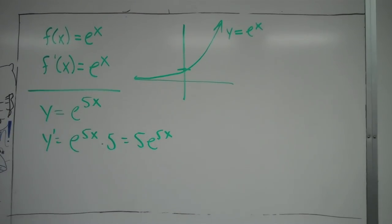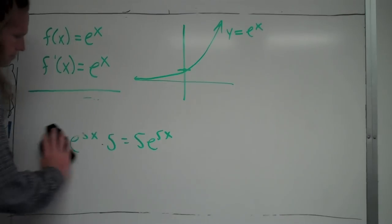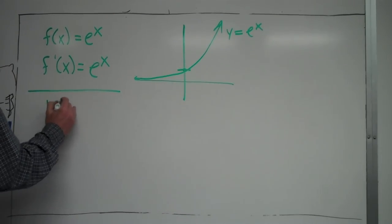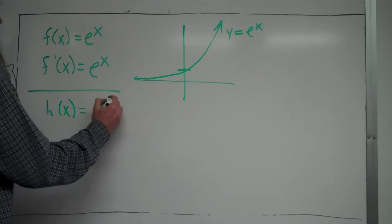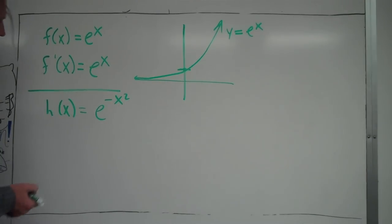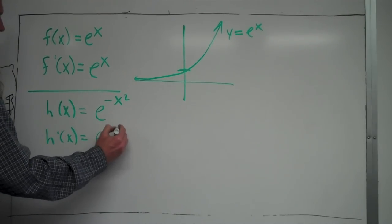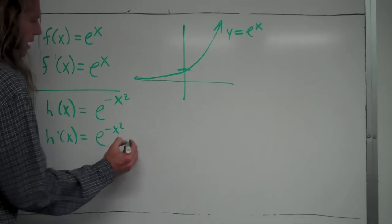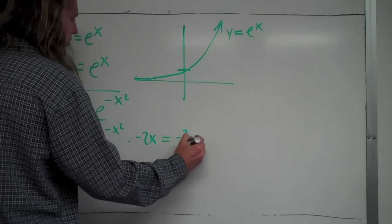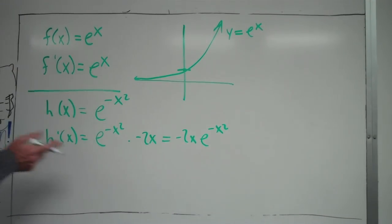So you might rewrite it as 5e to the 5x. That is an example of finding the derivative of an e to the x function. No matter what it might be — for instance, maybe you might have something like h of x is equal to e to the negative x squared. Again, the derivative of e to the x is just e to the x, so the first step is the derivative is just going to be e to the negative x squared. But the inner function isn't just x, so you have to multiply times the derivative of the inner function, which is negative 2x. You usually see that written as negative 2x e to the negative x squared.